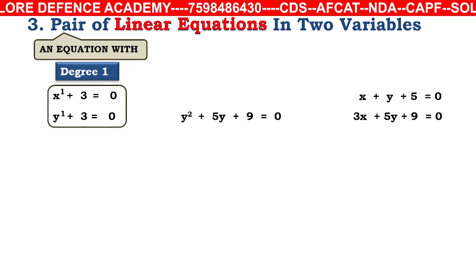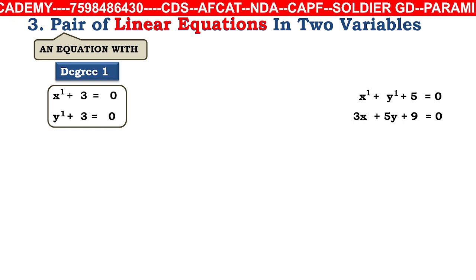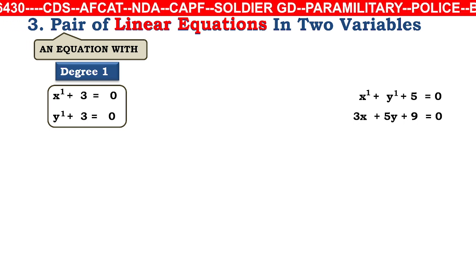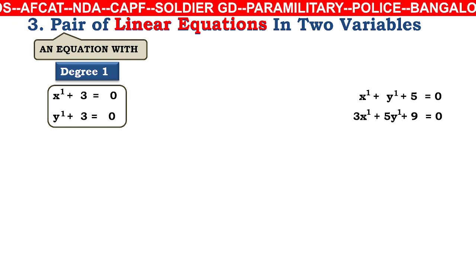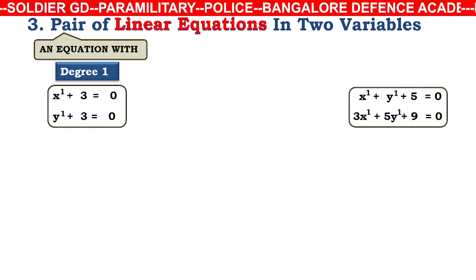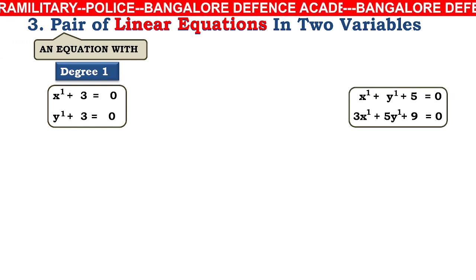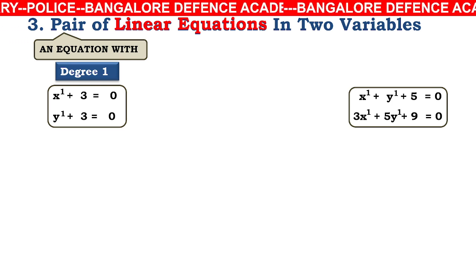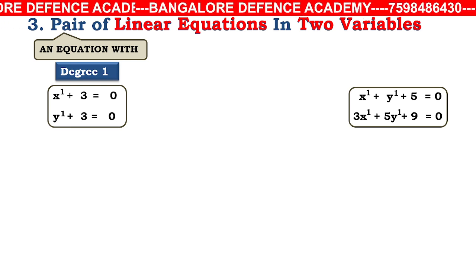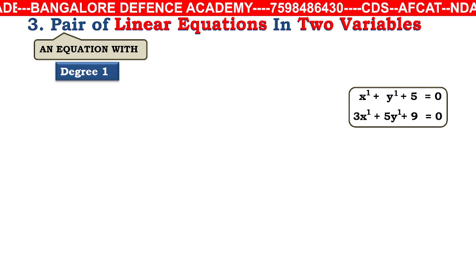In a linear equation with two variables, you have two variables x and y, each with power equal to 1. For example, 3x¹ + 5y¹ + 9 = 0. Finding the values of x and y in such equations is what we are going to learn in this chapter.